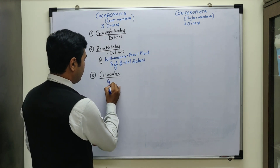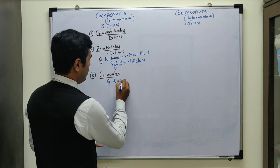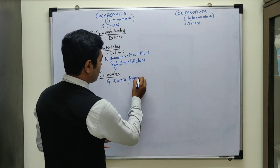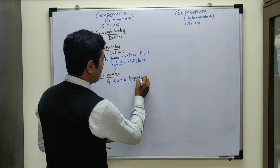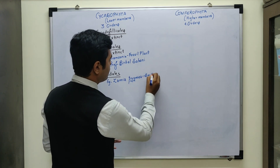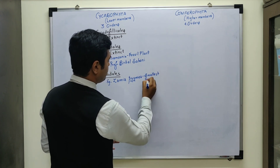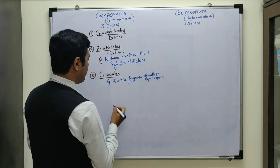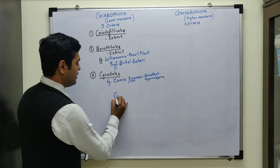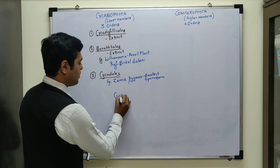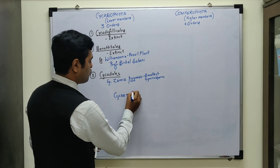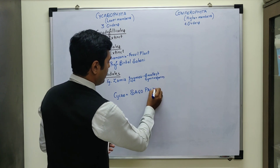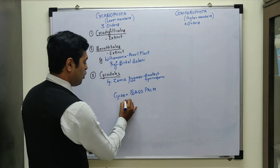The third major order of Cycadophyta is Cycadales. So there is Cycadofilicales, Bennettitales, and Cycadales. In Cycadales, one important example is Zamia pygmia. Remember that Zamia pygmia is the smallest gymnosperm. Apart from this, another important member of Cycadales is the Cycas plant, which is also known as the sago palm tree.